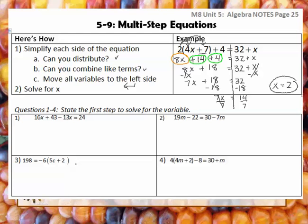For questions 1, 2, 3, and 4, all we're going to do is identify what the first step to solve would be. For number 1, do we need to distribute? No. Do we have any combining like terms? Yes, we're going to combine the 6x and the negative 13x. So I need to do my combining like terms first.